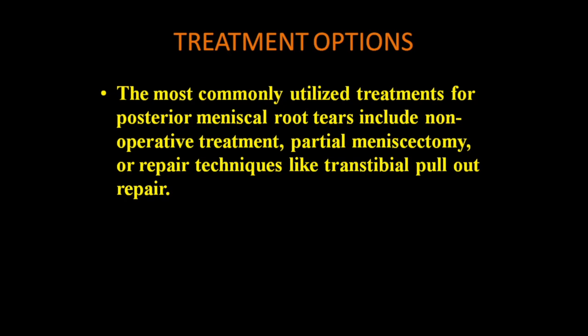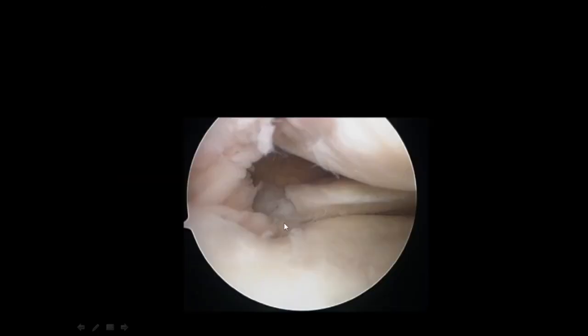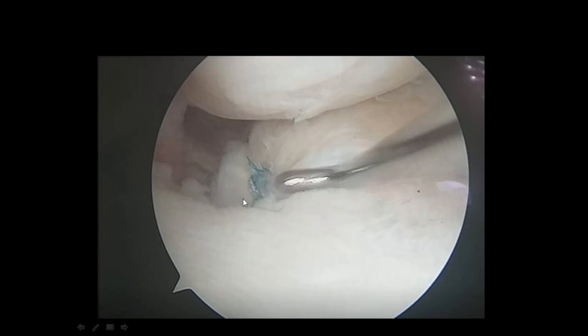Treatment depends on age, profession, symptoms, condition of the meniscus, degree of cartilage defect, subchondral arthritic changes, and insufficiency fractures. Options range from non-operative conservative management to partial meniscectomy or various repair techniques. One technique discussed is transtibial pull-out repair, performed in young patients with a relatively healthy root. Arthroscopic images show the root tear appearance before and after repair.